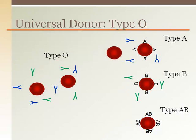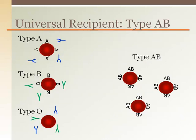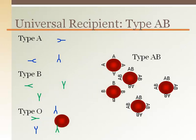Type A only has anti-B antibodies, so it will not attack O. Type B only has anti-A antibodies, so it will not attack O. And type AB has no antibodies, so it won't attack O. Type AB is the universal recipient because it lacks plasma antibodies, so none of the incoming blood will be attacked.